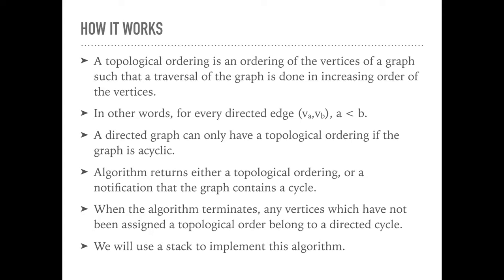A directed graph can only have a topological ordering if the graph is acyclic. If there is a cycle in the graph, we can't find a topological ordering.